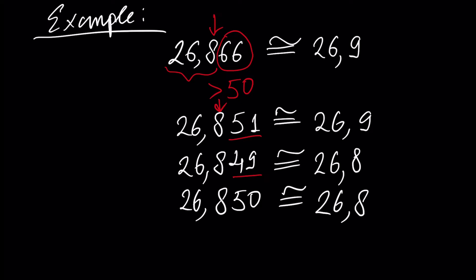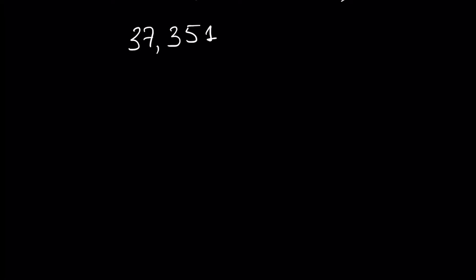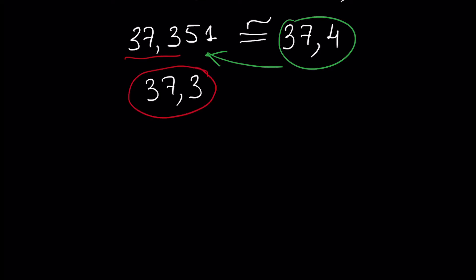Let's solve another example to be clear. Assume we have the number 37.351 and we want to leave three digits. This will be equal to 37.4 — we could leave 37.3, but 37.4 is closer to the original number rather than 37.3. So 37.3 is not closer, and 37.4 is closer.